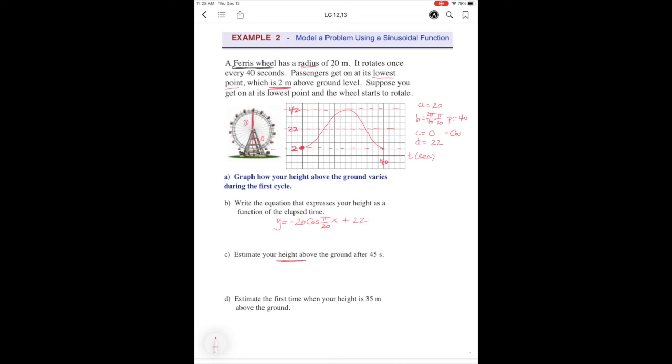Now it's the same thing that we've been doing earlier. We want to find the height at 45 seconds, so that is going to go into the x or the t if I want to label it t. Well, if you did that, you should get an answer of 7.86 meters.